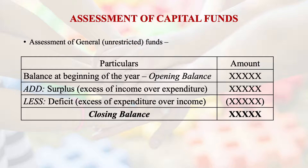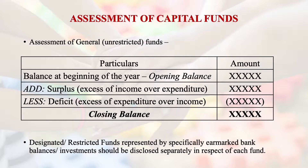For the assessment of restricted funds, the tabular form is in the same manner. The opening balance is noted, then additions during the year — any surplus — are added, and deductions during the year — any deficits — are reduced, to arrive at the closing balance. Designated or restricted funds are represented by specifically earmarked bank balances or investments and should be disclosed separately in respect of each fund.